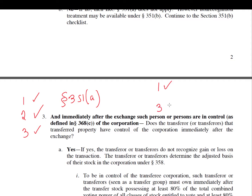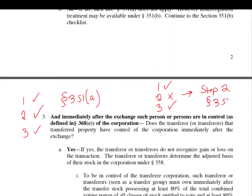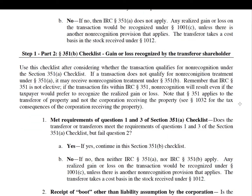But what happens if we meet requirements one and three, but not requirement two? Then we have to go to step two, and that's the purpose of this video. Step two considers Section 351B, which may provide some non-recognition availability. We use the 351B checklist only after considering the 351A checklist — we have to go to 351A first. Ordering is important. If the transaction does not qualify under 351A, then proceed to the 351B checklist. Recall that Section 351 is not an elected position; it's mandatory.